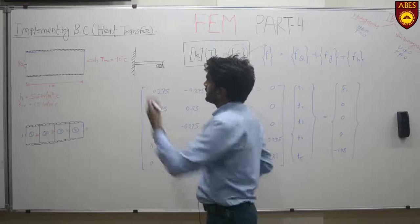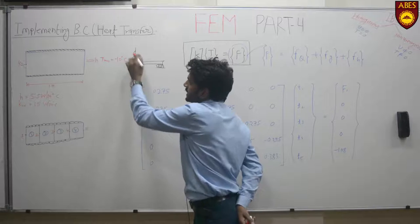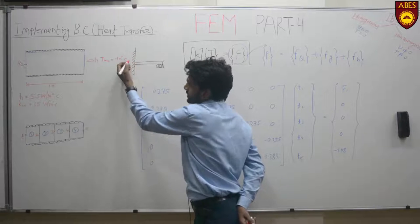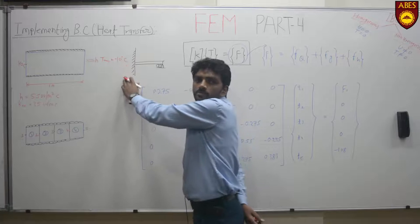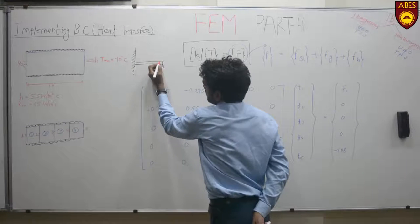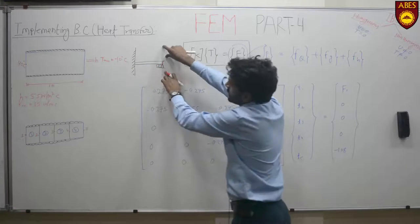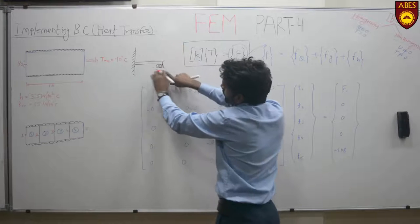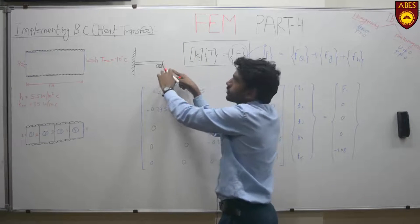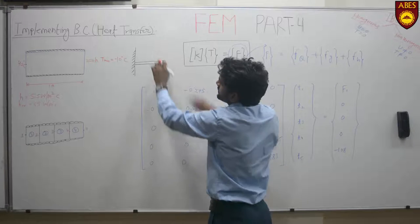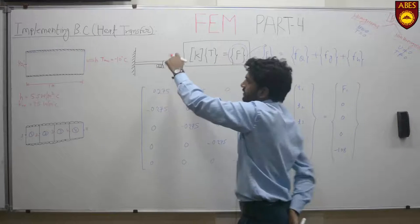The beam is either simply supported, cantilever, or roller supported at a particular end. If any particular point is fixed, it means there is neither rotation nor displacement or vertical displacement. On the right side, if there is a roller, it means it is going to move left and right, but it is not going to move upward — meaning there is a restriction in the vertical direction.